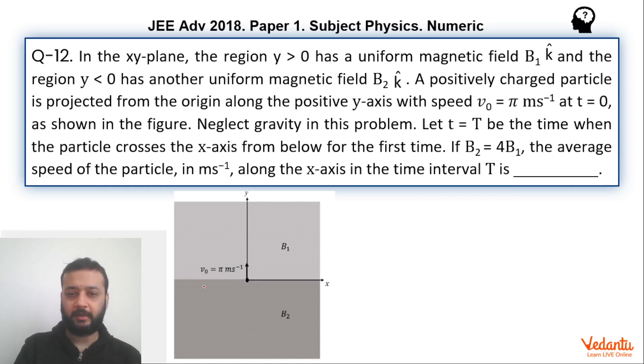In this question, it is given that above the x-axis the value of magnetic field is B1 and directed towards us, that means it is coming out of the screen. Below the x-axis the value of magnetic field is B2, direction is same. The value of B2 is 4 times B1. Now a charged particle is projected at the speed of 5 meter per second from the origin along y-axis.